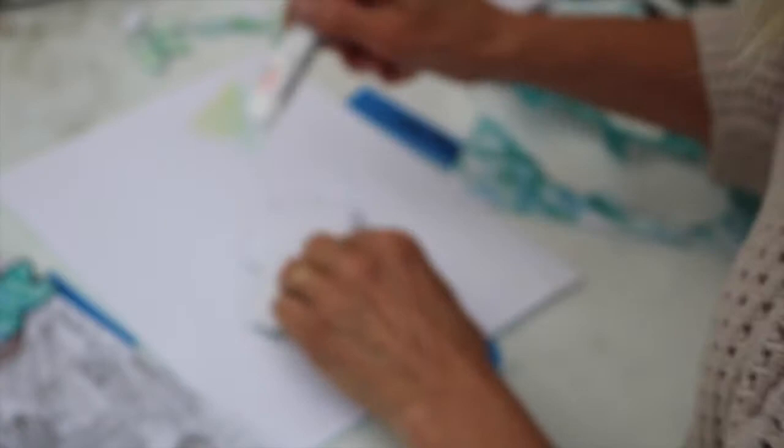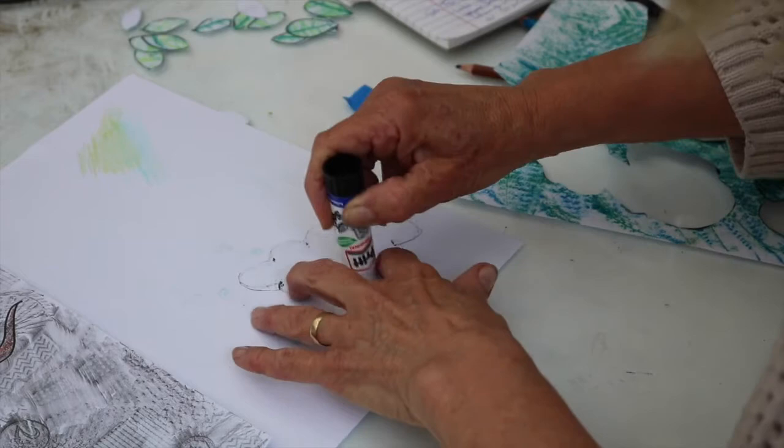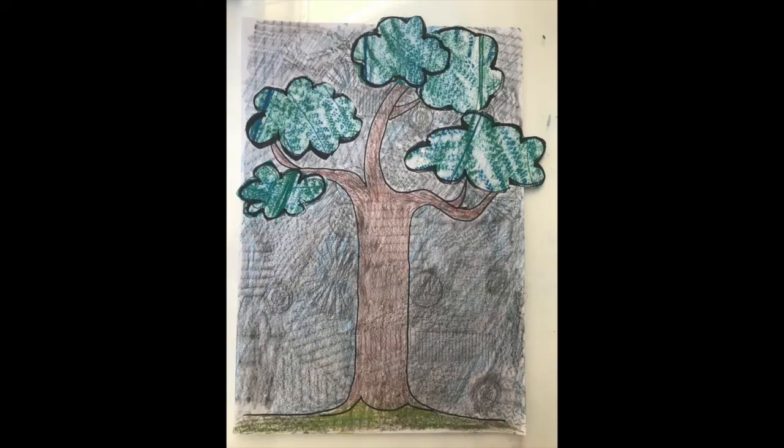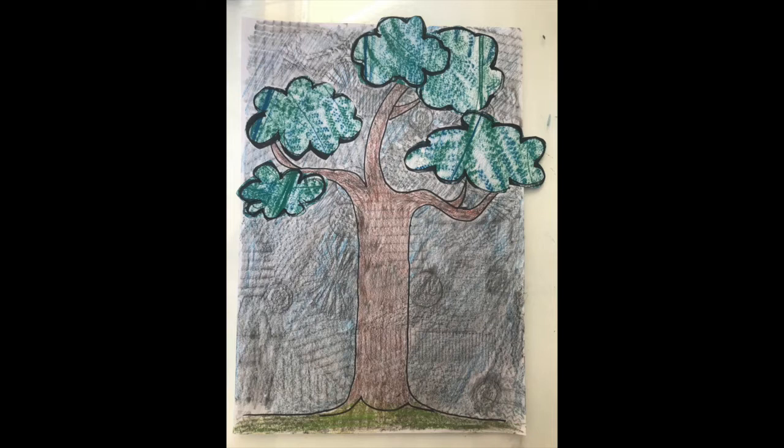And start gluing them into place. Just the glue stick. I'm just going around the edges. I don't mind if the tree comes off of the edge of the paper a bit. I don't mind that because I can fix that when I pop it into the woodland. So if your leaves are going to come outside of the edge of paper, that's fine.